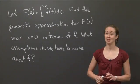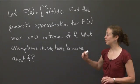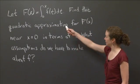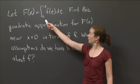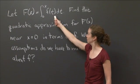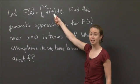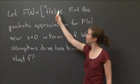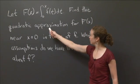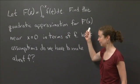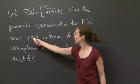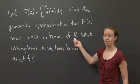Welcome back to recitation. In this video, I'd like us to work on the following problem. We're going to let capital F of x equal the integral from 0 to x of little f of t dt. And I want us to find the quadratic approximation for big F near x equals 0 in terms of little f.